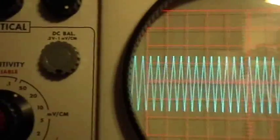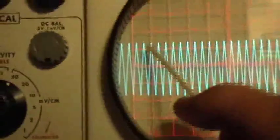So we use, again, we use the horizontal position control to move one of those peaks to where it's right on the second graticule marker. Right there.